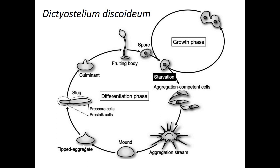That mound develops further into a slug, and this slug is actually motile — it can crawl maybe a few millimeters or a bit further. Then the slug will stop and create this fruiting body. From the sorus of the fruiting body, amoeba cells will burst out and begin the life cycle as single cells again.